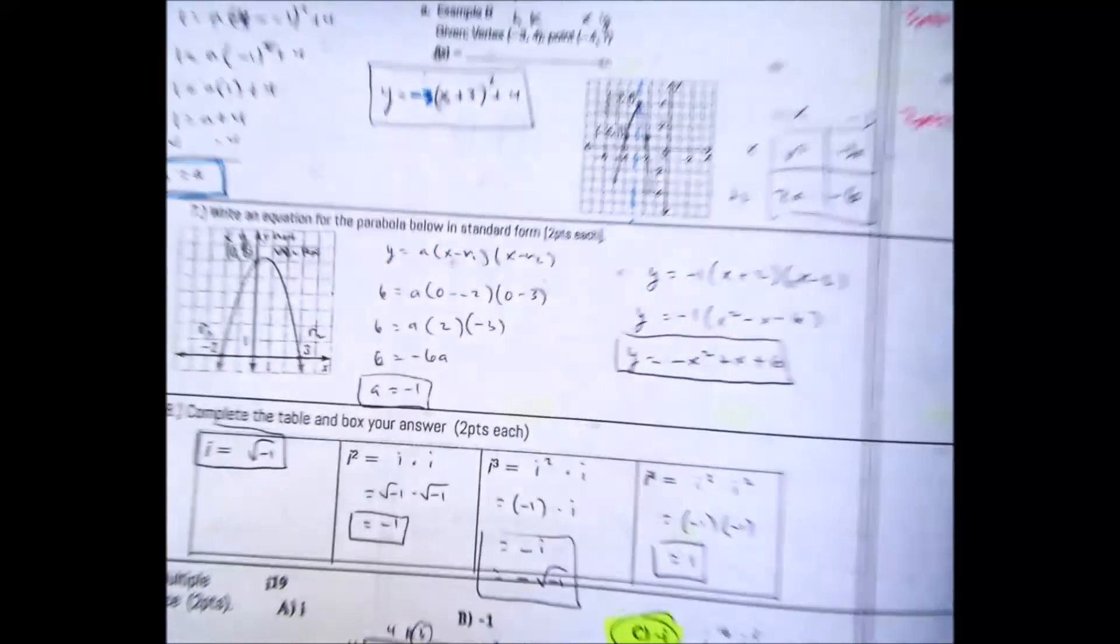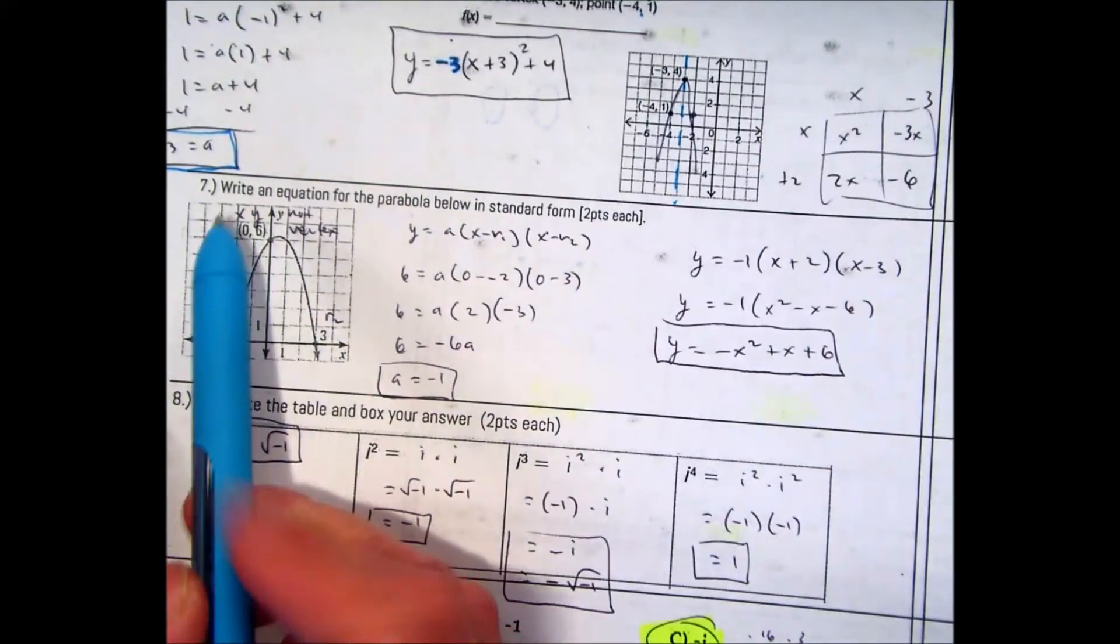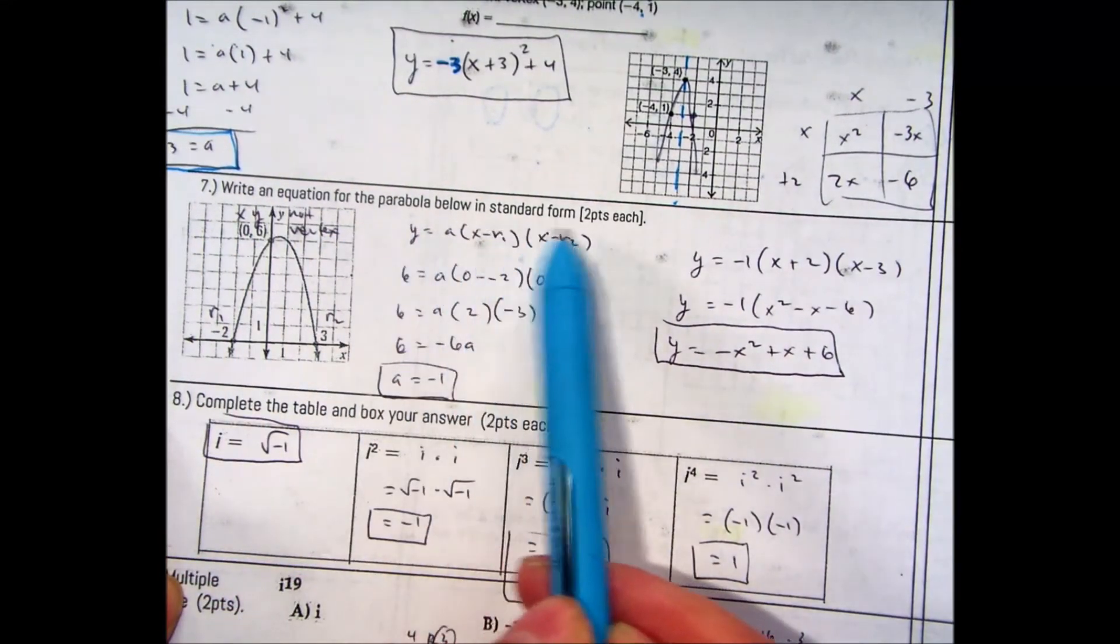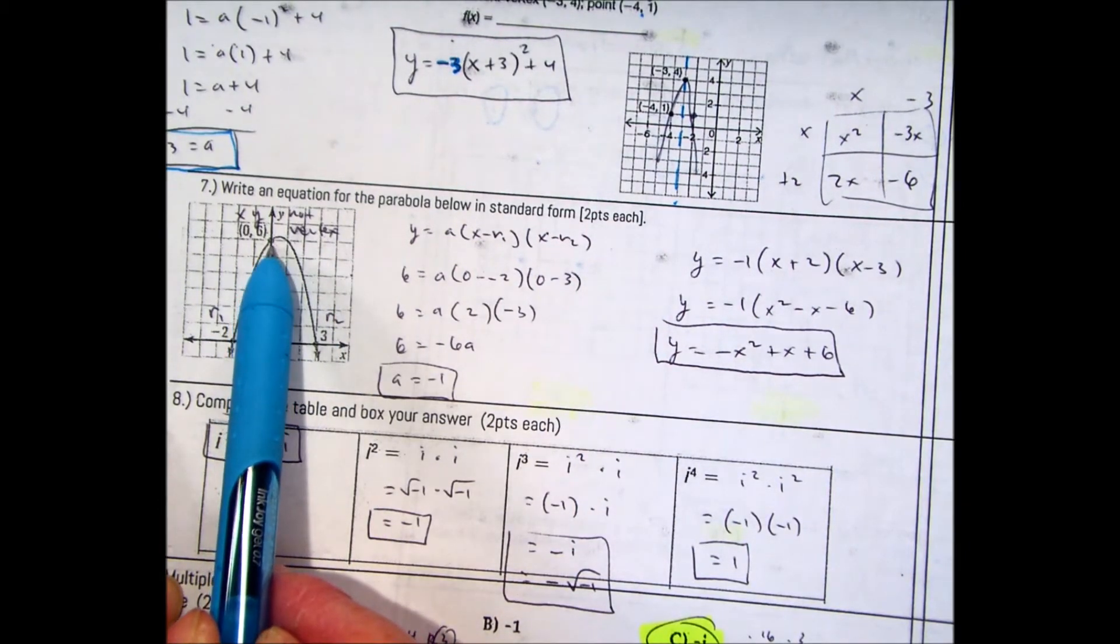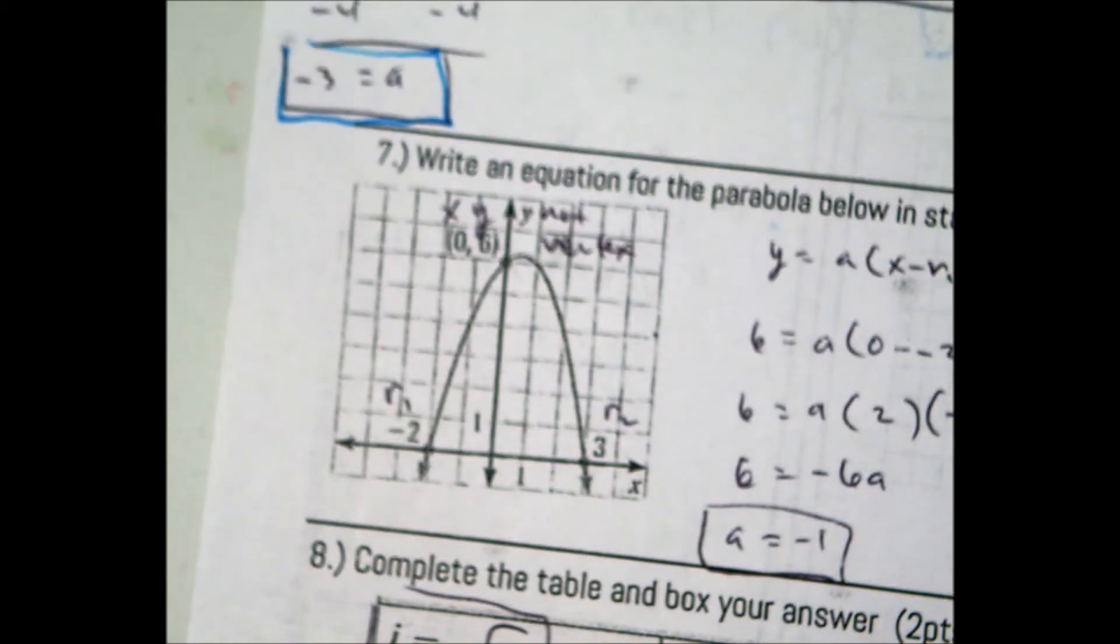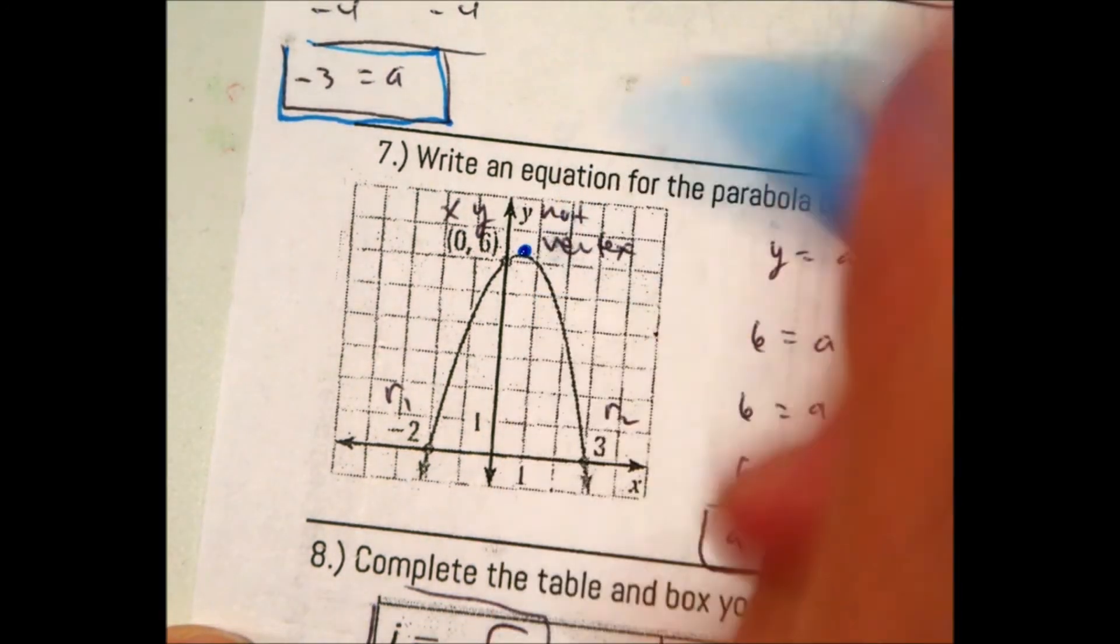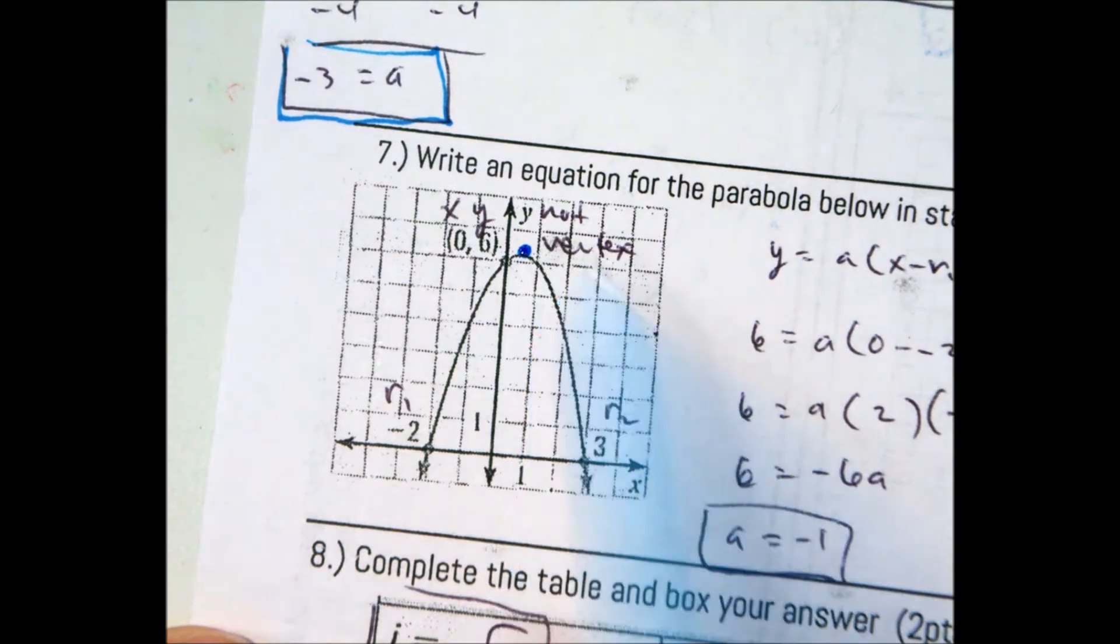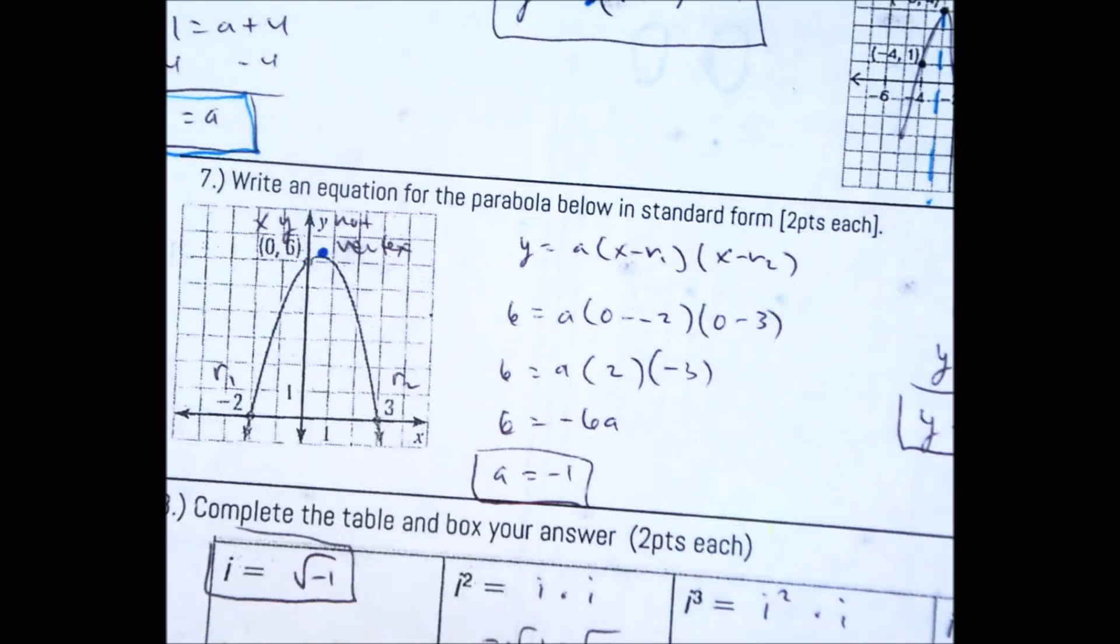Question number 7. Write an equation for the parabola below in standard form. If you notice this problem here, 0, 6. This is a common mistake for students. 0, 6 appears to be the highest point. Here is the highest point. That means 0, 6 is not the vertex. Common mistake. You don't have the vertex so you should not be using vertex form.